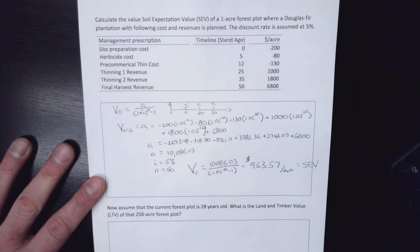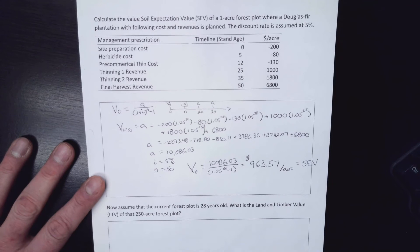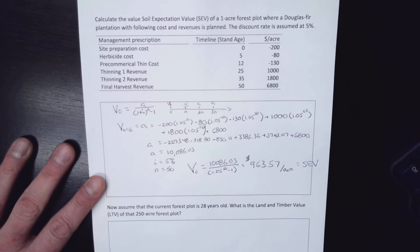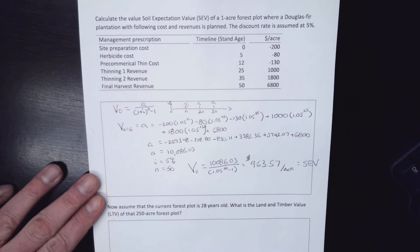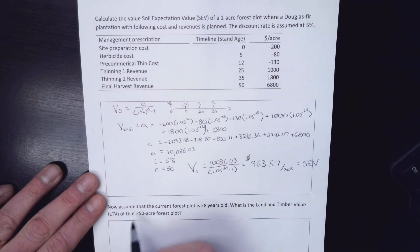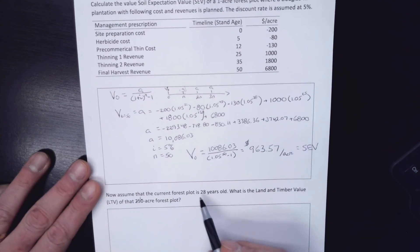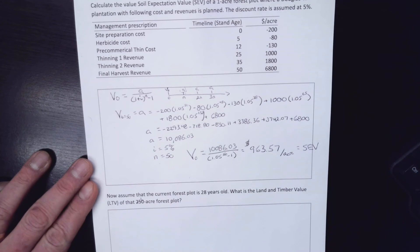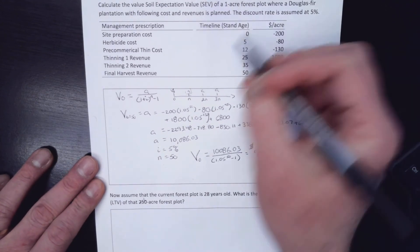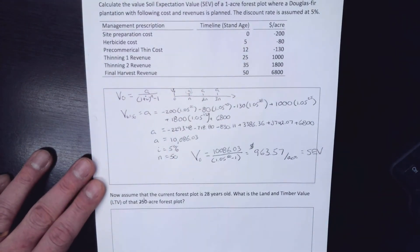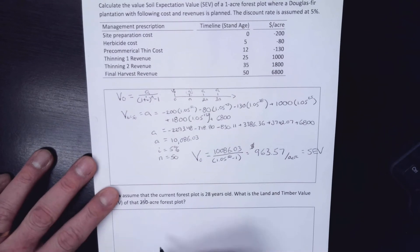So an acre of dirt, bare land is worth $963. All of these things perpetually over time is $963 per acre. So now I can step down and let's just go with one acre here. And I can say, what if this thing is 28 years old in the homework? So we're somewhere in the middle of all this. What would that look like?